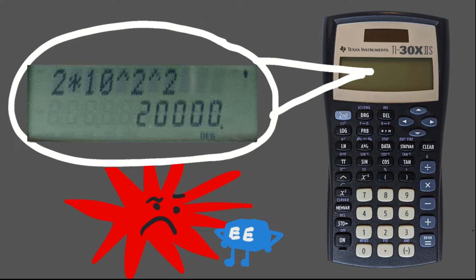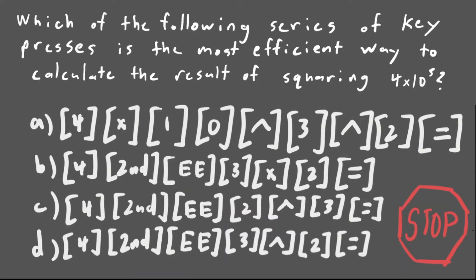If you're still not convinced, try out this question. Which of the following series of key presses is the most efficient way to calculate the result of squaring 4 times 10 to the third? That's right! The first answer choice here is, of course, not using the EE function, which we've already established is a pretty bad idea.